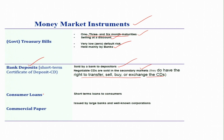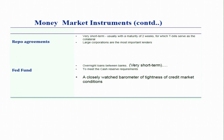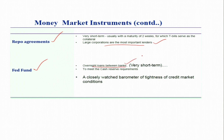Consumer loans are another money market instrument — short-term loans to consumers. Commercial papers are also short-term instruments issued by large banks and well-known corporations to meet their day-to-day operations and liquidity requirements. Repurchase agreements (repos) are very short-term instruments, usually with a maturity of two weeks, for which treasury bills serve as the collateral. Large corporations are the most important lenders in this market.